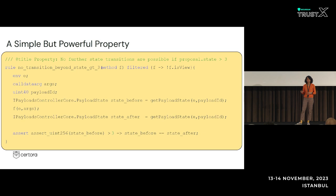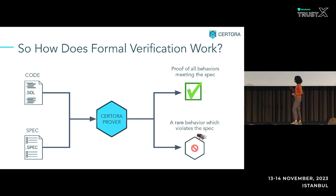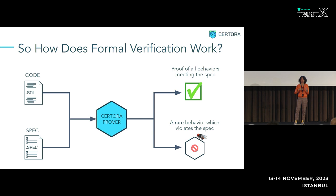Now let's talk about how exactly the prover checks these kinds of properties. At a very high level, the Certora Prover takes two inputs: code written in Solidity, Vyper, or now even Solana/C, and a specification — the CVL spec we just saw. Both go into the prover, which either tells you there is a violation or that the code satisfies the specification, so you feel confident your code is correct. Of course, the specification is the ground truth — the code is only checked against what you write in the spec, so it will be as correct as the spec.